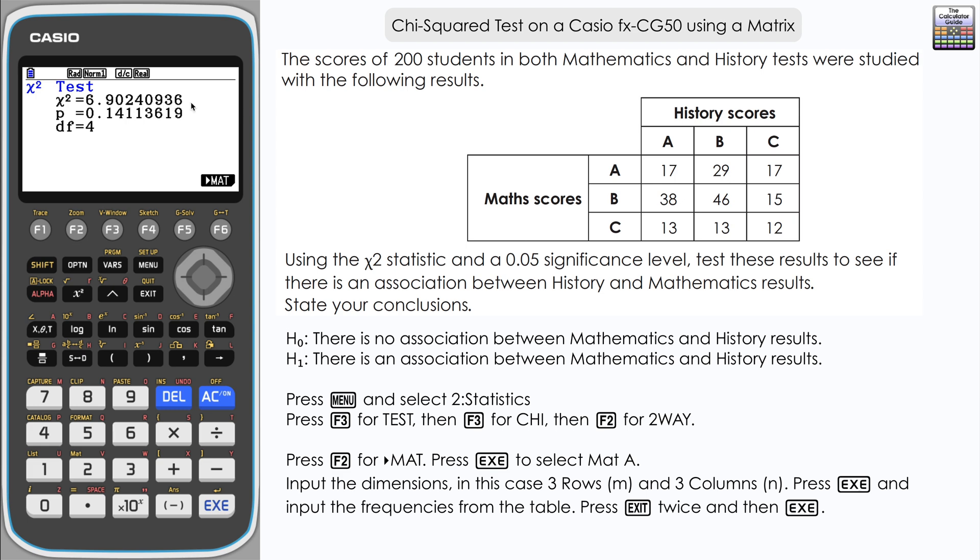The top one is our chi-squared result, 6.902 to four significant figures. Then we've got a p-score which we don't need for this particular question, but it's available if we need it. Below that we've got the degrees of freedom, which is four. We've got three rows minus one times three columns minus one, so two times two equals four degrees of freedom for this test.